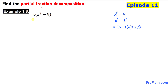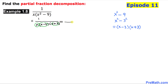So far so good. This denominator can be written as x times x minus 3 times x plus 3. Now let's focus on the denominators — we have three linear factors: x, x minus 3, and x plus 3. That means we are going to write them as three separate fractions: one fraction plus another plus another.